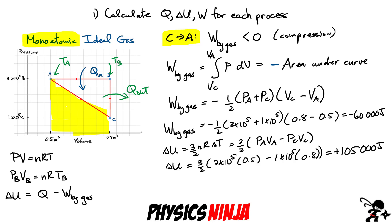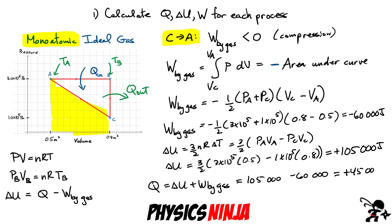The heat for process C to A: Q = ΔU + W_by_gas = 105,000 + (−60,000) = +45,000 joules. That's a positive value, meaning heat is going into the gas for that process as well.